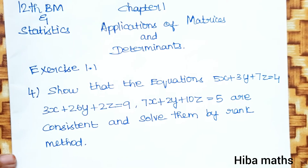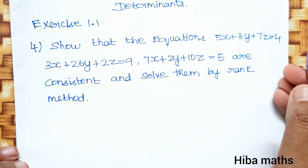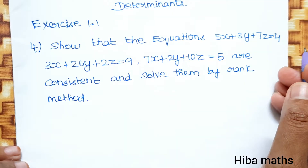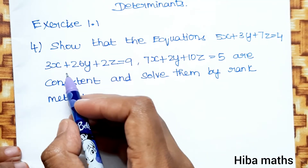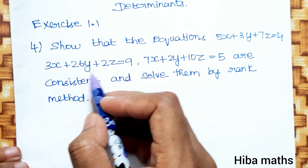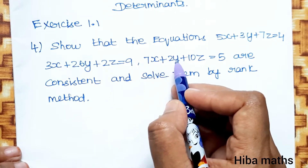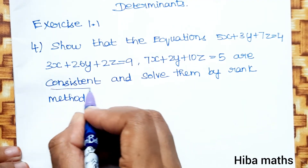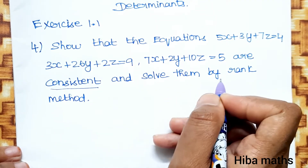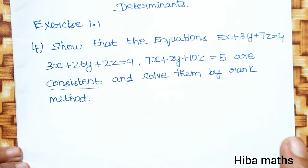Exercise 1.1, 4th question: Show that the equations 5x plus 3y plus 7z equals 4, 3x plus 26y plus 2z equals 9, and 7x plus 2y plus 10z equals 5 are consistent, and solve them by rank method. We need to show it is consistent and solve by rank method.